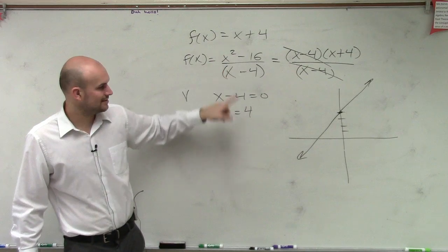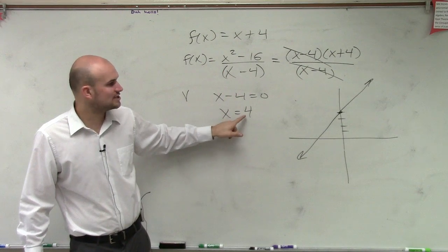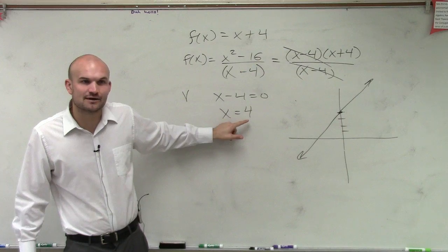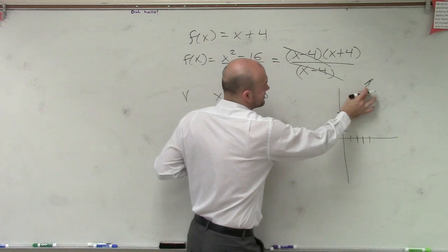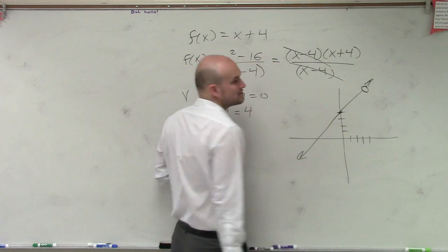So this graph is now going to have a point of discontinuity at 4. So at 1, 2, 3, 4, I go up to my point, and now I'm going to have an open circle.